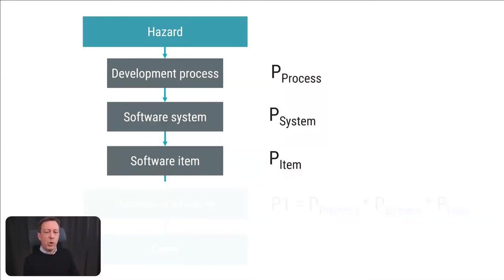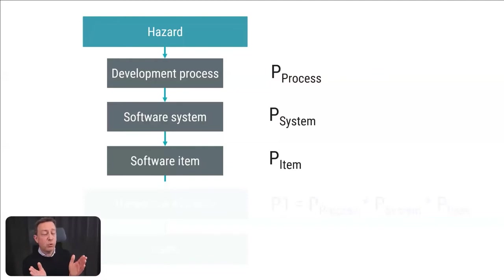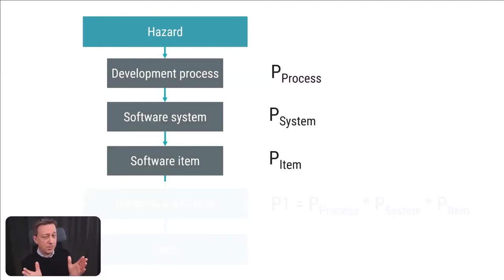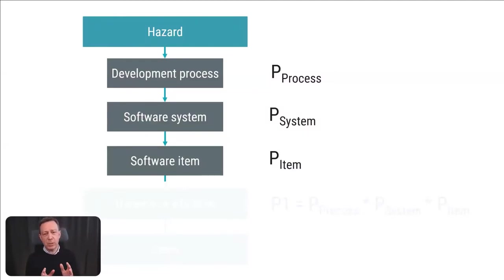When working with risk control measures at the software item level, it often relates to adding functionality to the source code — such as protecting data with checksums. The tricky thing here is that adding more source code means more things can go wrong. Spreading software risk control measures all around just because you can does not necessarily have to be a good thing.